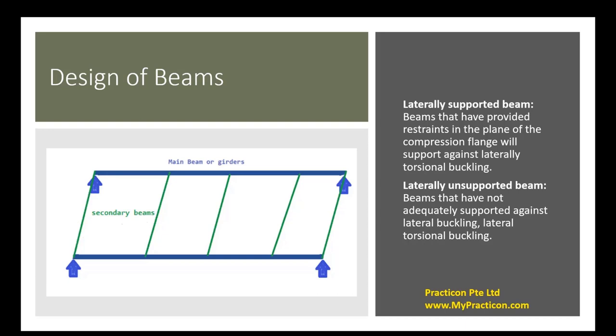Majority of the codes straightaway have given formulas to estimate the beam capacities based on the laterally supported beam and laterally unsupported beam.